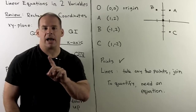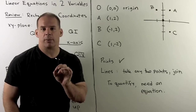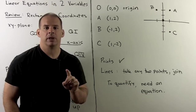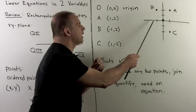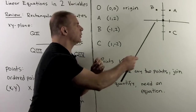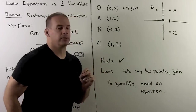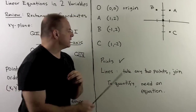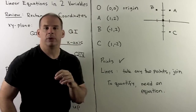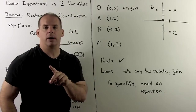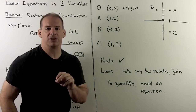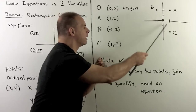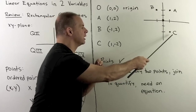If I take (-1, 2), so x equals -1 and y equals 2, we go left by 1 and up by 2 to reach point B. Finally, (1, -2) means x equals 1, y equals -2: go right by 1, down by 2 to reach point C.